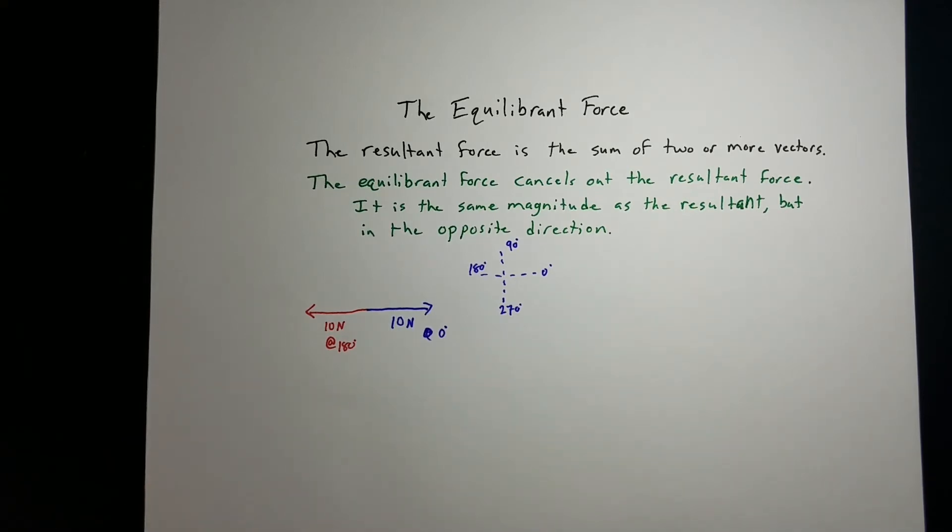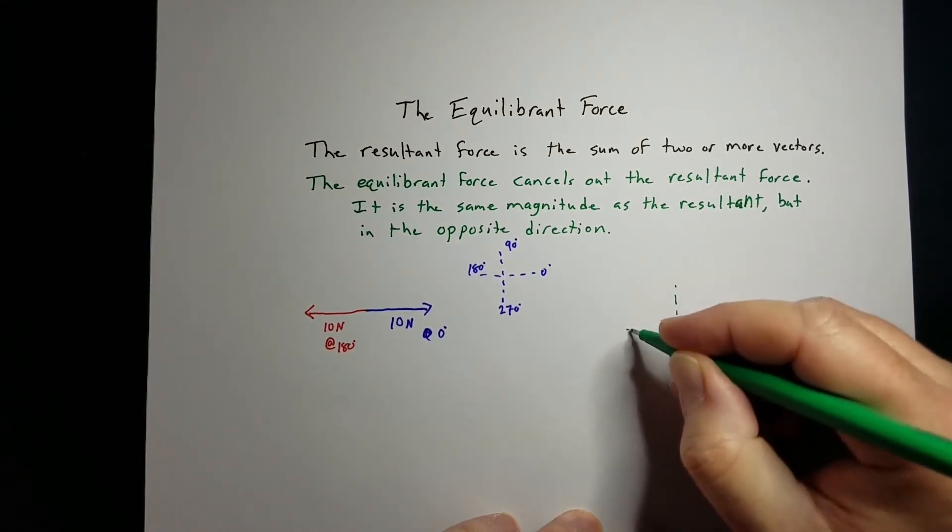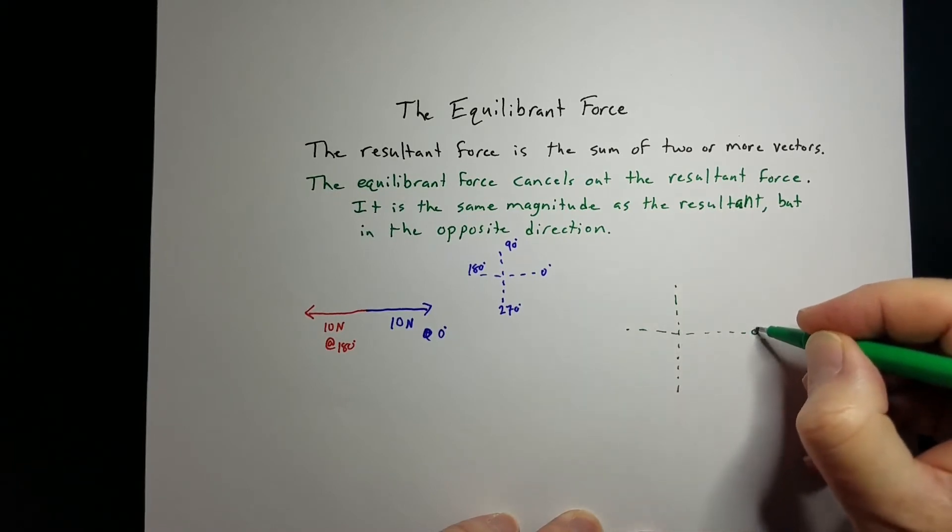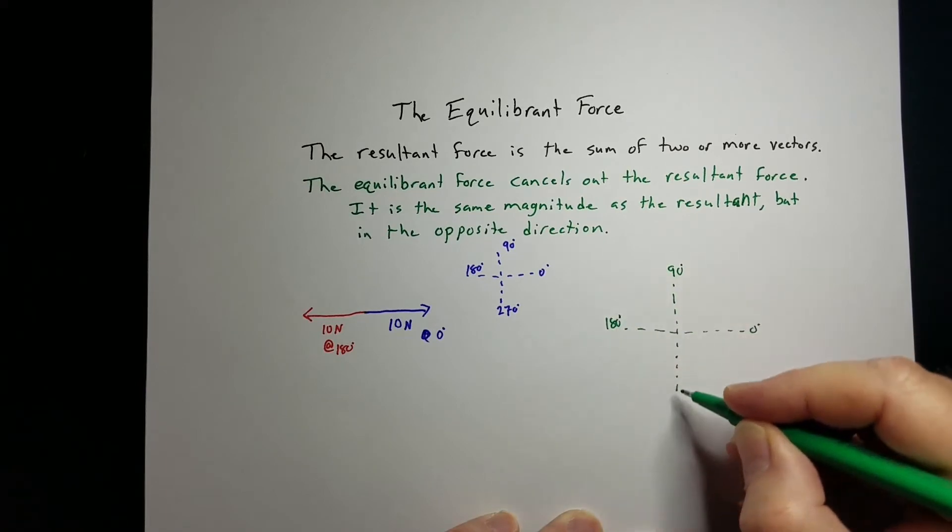If I've got one, here's my coordinate system: 0 degrees, 90, 180, 270.